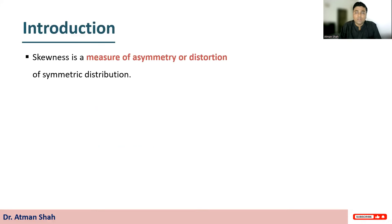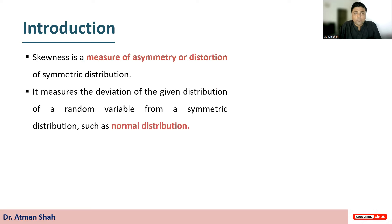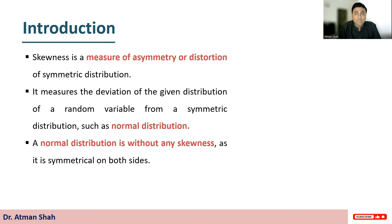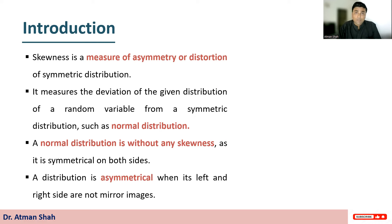Let's begin with the introduction. Skewness is a measure of asymmetry or distortion of symmetric distribution. Basically, it measures the deviation of the given distribution of a random variable from a symmetric distribution such as normal distribution. You can also find my video on normal distribution — the link is given in the description. So a normal distribution is without any skewness as it is symmetrical on both sides. A distribution is not symmetrical when its left and right sides are not mirror images — that is the idea of skewness.